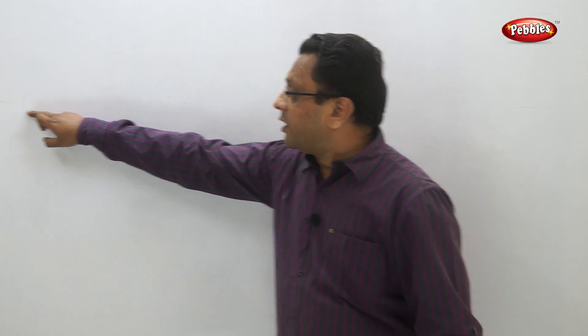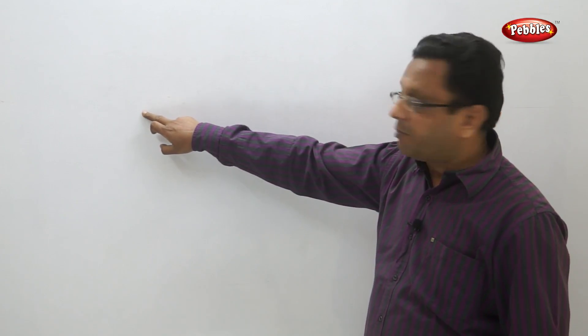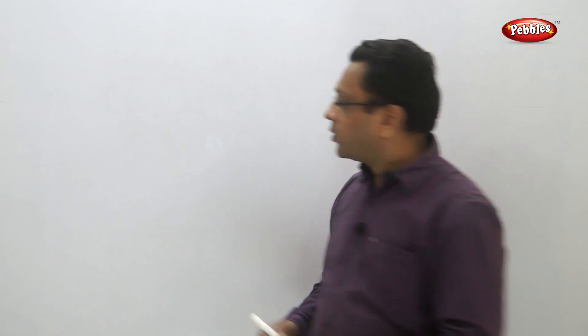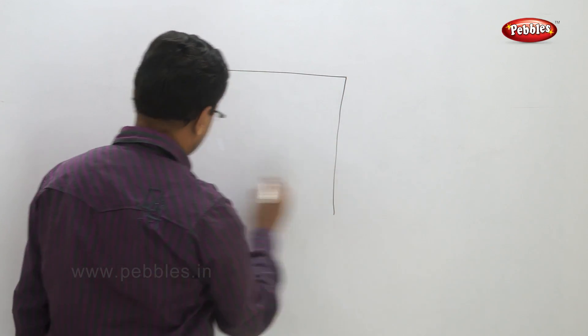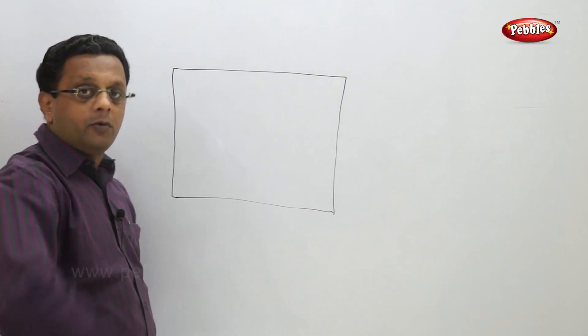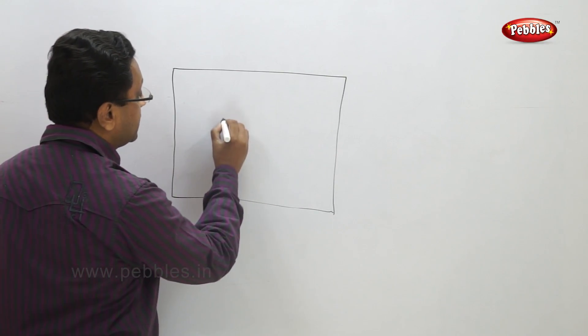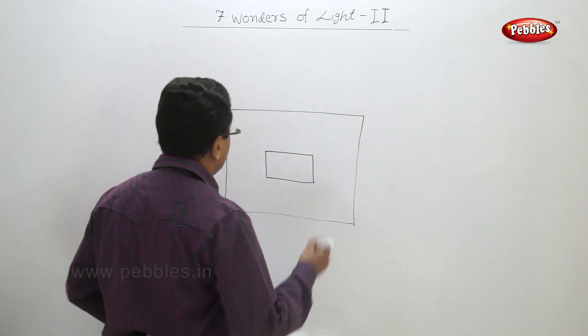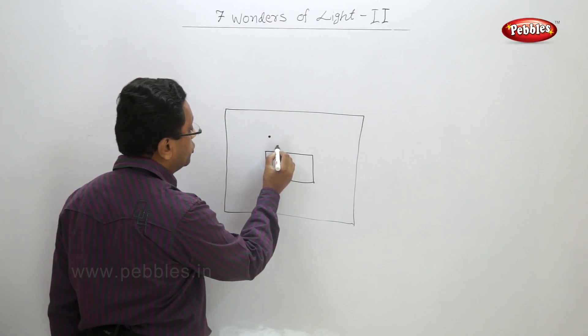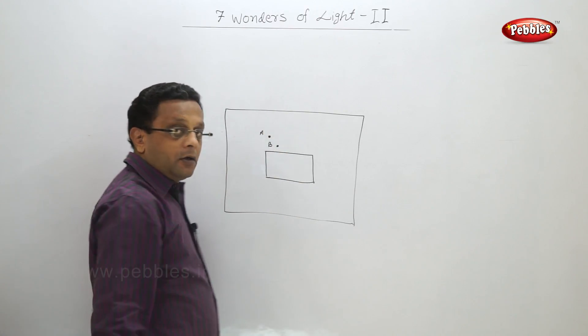Till now if light is traveling in a straight path, after changing the medium it deviates with some angle. This is called refraction of light. We can do one experiment to see the refraction of light. I am taking a plain paper — this is the top view of the experiment. I have put one glass slab and I need four pins. I will put pin number one and pin number two, or we can call them A and B.